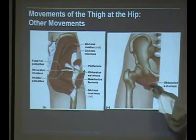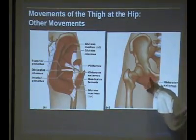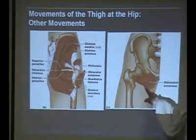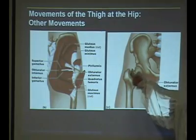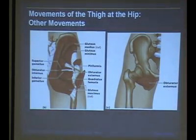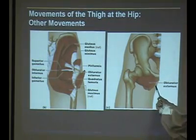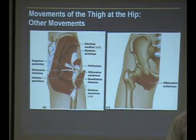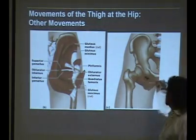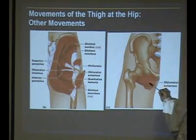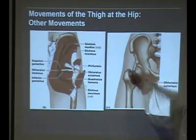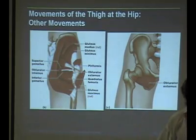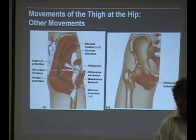Here's where the obturator foramen is — it's like a ring sitting there. The obturator externus comes off the external part of it, so part of it's going to be off the pubis, part off the ischium, going around the backside of the femur — so it's an external rotator. The obturator internus would come from the other side of that ring, but still attach to the posterior side. The internus starts more on the posterior side, whereas the externus is more on the anterior side and has to dive and come back around.